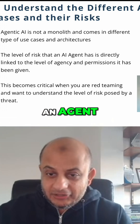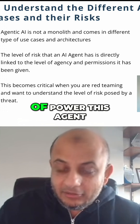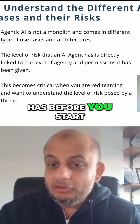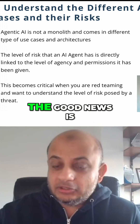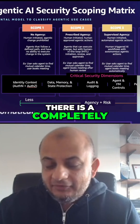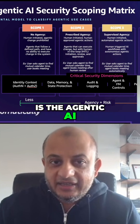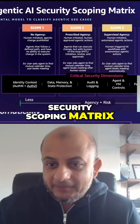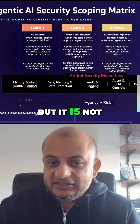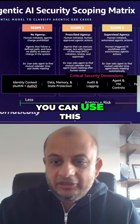So when you're red teaming an agent, you have to understand what is the level of power this agent has before you start compromising it. The good news is there's a completely free framework called the Agentic AI Security Scoping Matrix, released by AWS — but it is not focused only on AWS, you can use it for any environment.